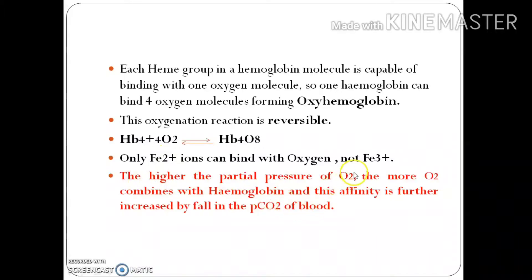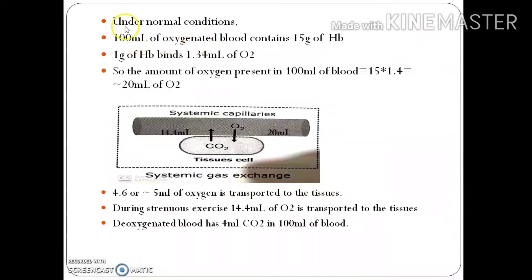The higher the partial pressure of oxygen, the more oxygen combines with hemoglobin, and this affinity is further increased by a fall in PCO₂ of the blood. If there is less carbon dioxide in the blood, more oxygen binds to hemoglobin because CO₂ has greater affinity for hemoglobin than oxygen. Under normal conditions, 100 ml of oxygenated blood contains 15 g of hemoglobin, and 1 g of hemoglobin binds 1.34 ml of oxygen, so 100 ml of blood carries approximately 20 ml of oxygen (15 × 1.34).